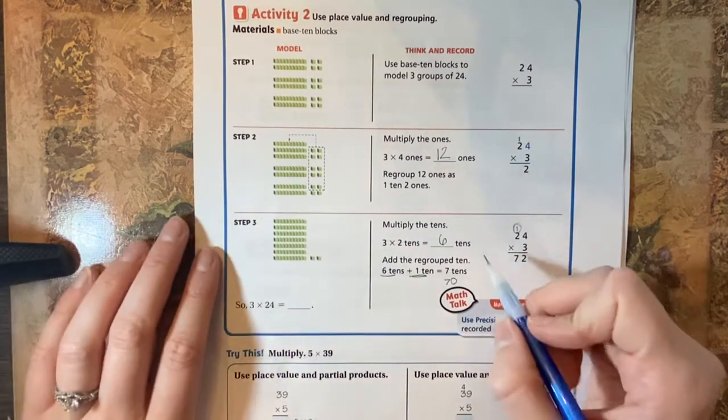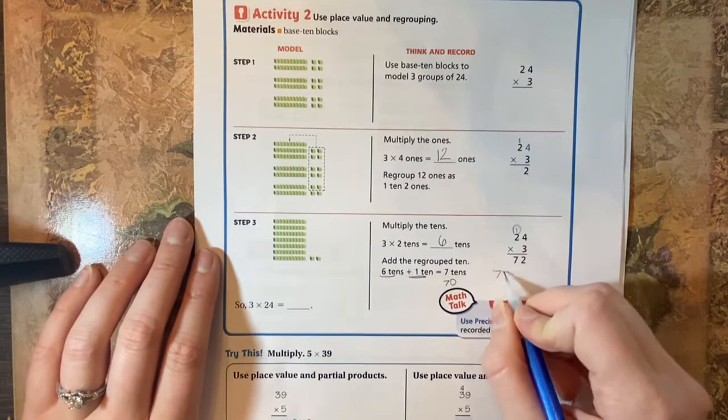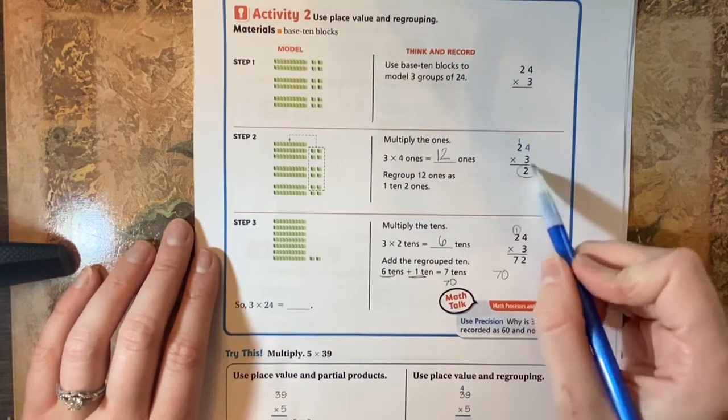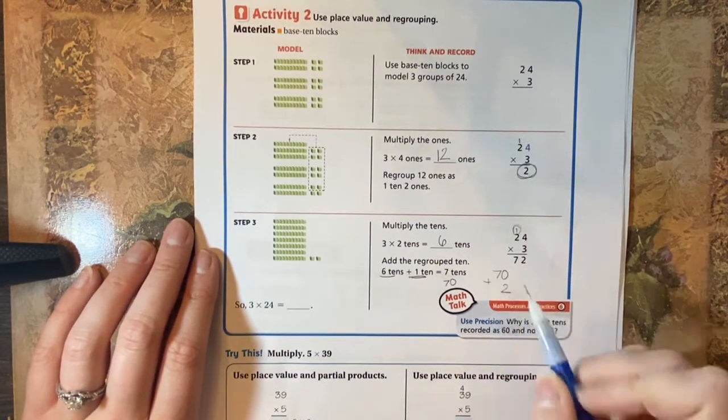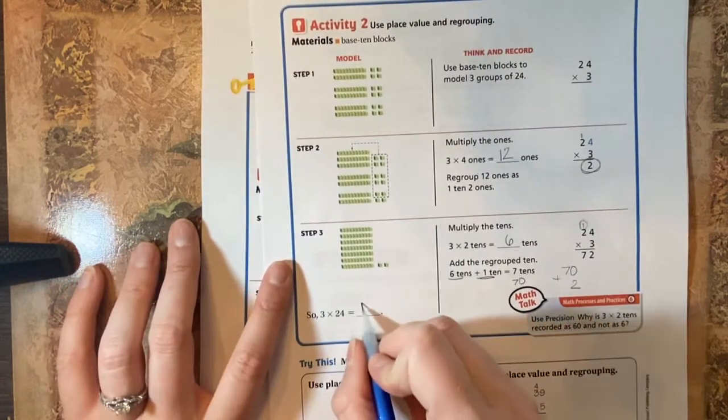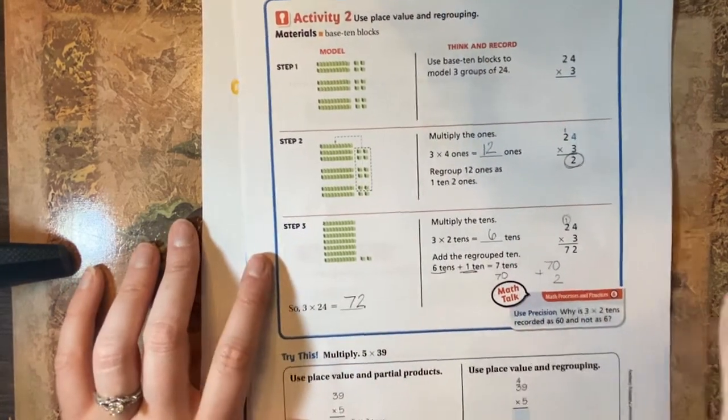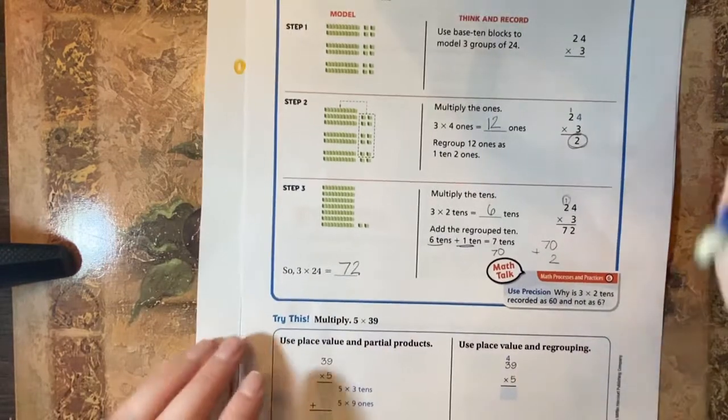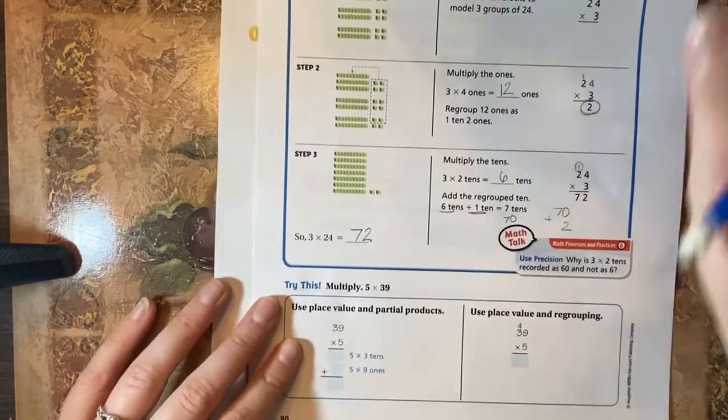But we had 70 plus those two little ones that we have here. So we add those together and our answer is 72. So that's a different way to do it, and I'm going to show you more examples of that in a minute.